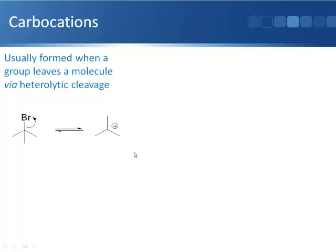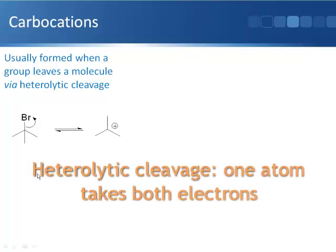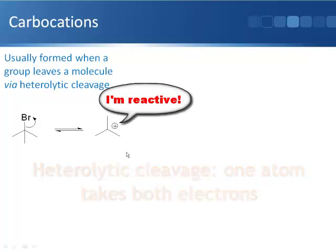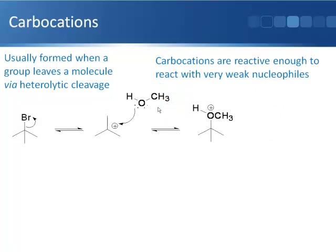Carbocations are generated by heterolytic bond cleavage, and these are really reactive species that will react with even weak nucleophiles — for instance, an alcohol. The alcohol is capable of being nucleophilic via its lone pair of electrons, which adds to this positive charge to form a new carbon-oxygen bond. These weak nucleophiles tend to have a proton attached, so after the bond-forming step there is a positive charge on the atom bearing the lone pair. To neutralize that, we lose the proton to get our neutral product.